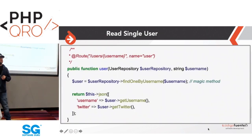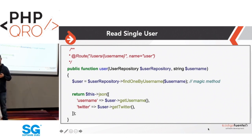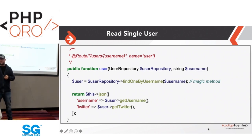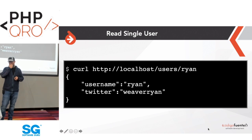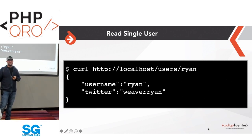We update the single-user method to use findOneByUsername as well. We've now used that method in a couple of places — if the query criteria ever changes, we only need to edit that one method in the repository. Fetching a single user now works the same as before but goes through the ORM.